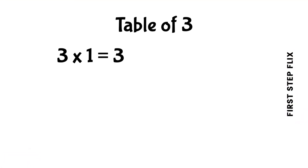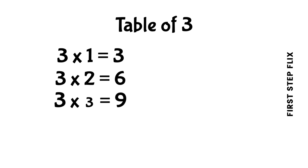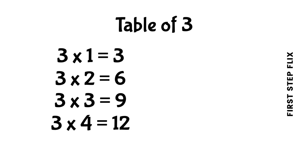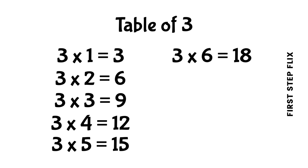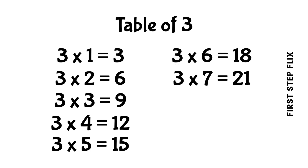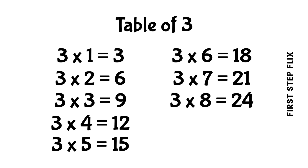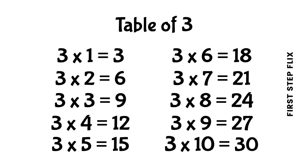Let's repeat. 3 ones are 3, 3 twos are 6, 3 threes are 9, 3 fours are 12, 3 fives are 15, 3 sixes are 18, 3 sevens are 21, 3 eights are 24, 3 nines are 27, 3 tens are 30.